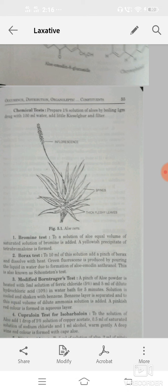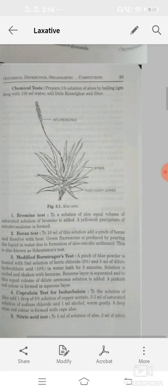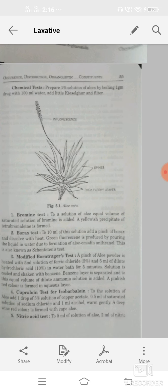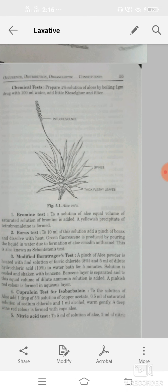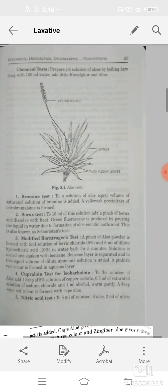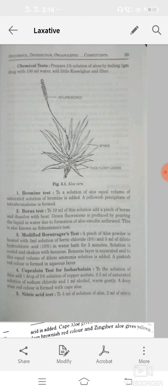To a solution of aloe, equal amount of bromine, add yellow precipitate is formed. Modified Borntrager test: pinch of aloe powder heated with 5 ml solution of ferric chloride or 5 ml of dilute HCl in water bath. Then cool and shake with benzene, benzene layer is separated.